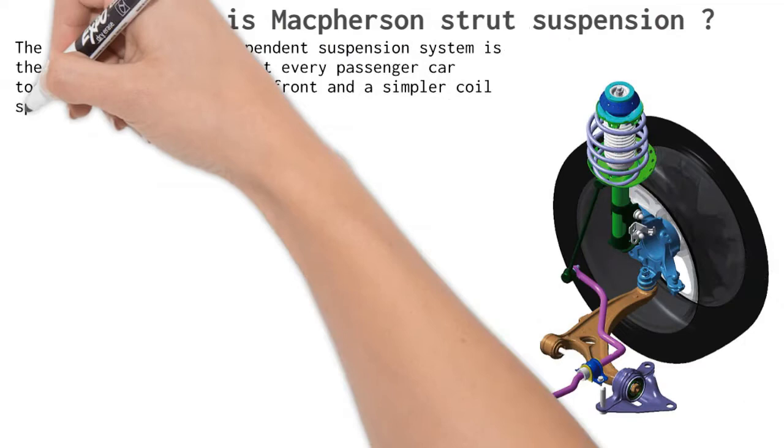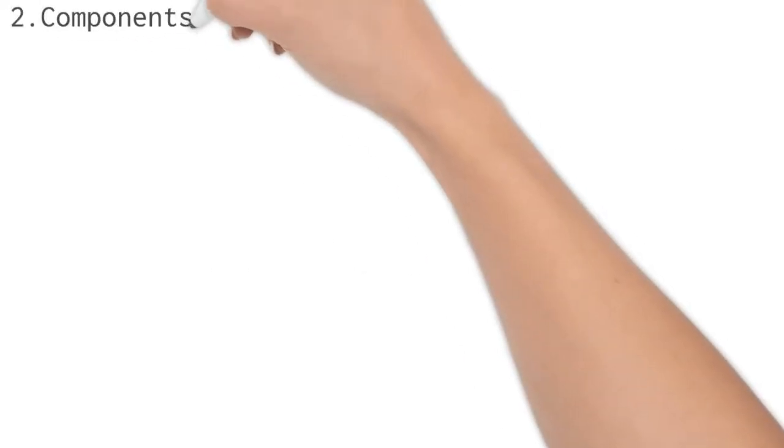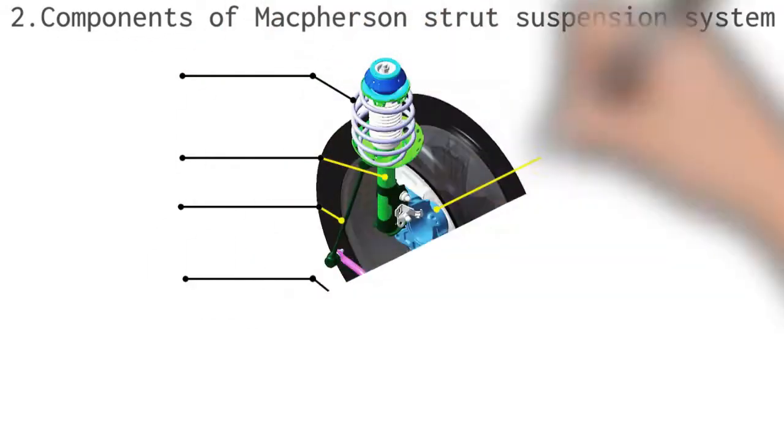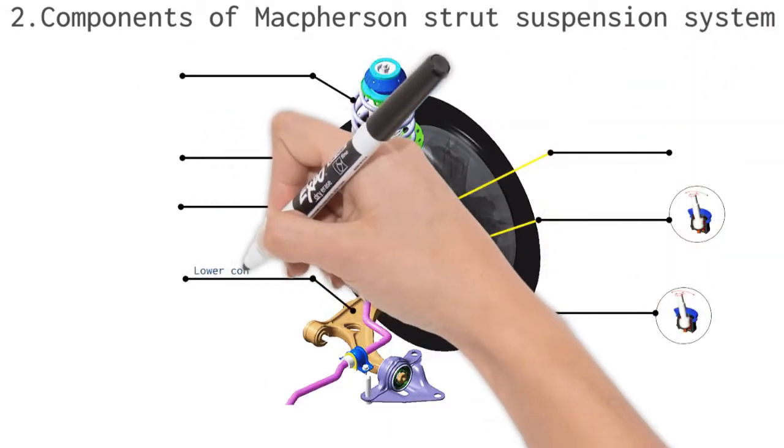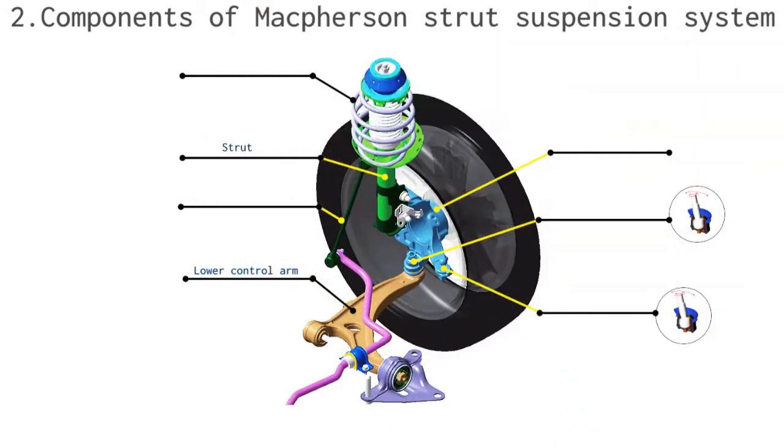MacPherson Strut Suspension system has following five major components. Number one, lower control arm. Number two, strut. Number three, coil spring. Number four, ball joint. Number five, anti-roll bar.